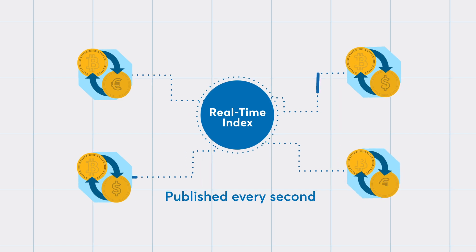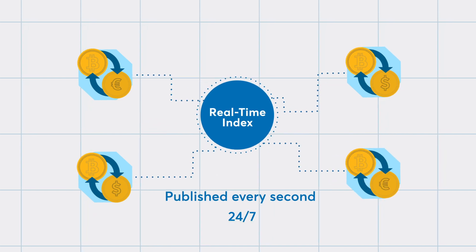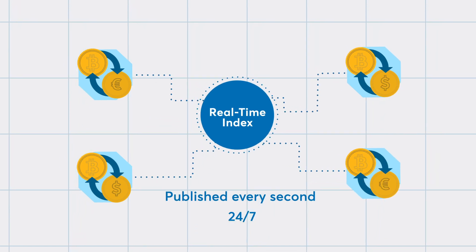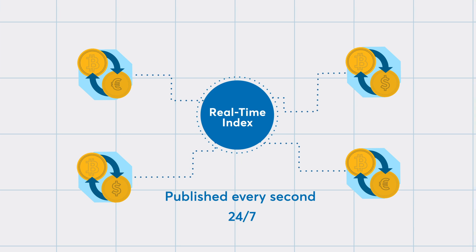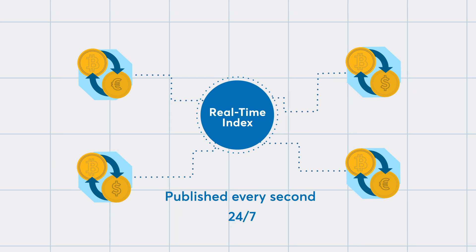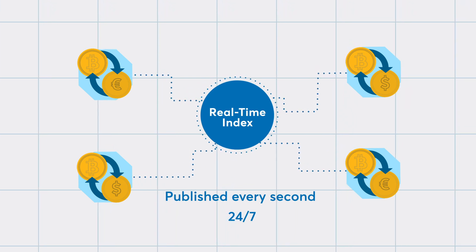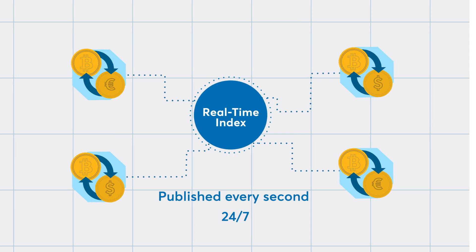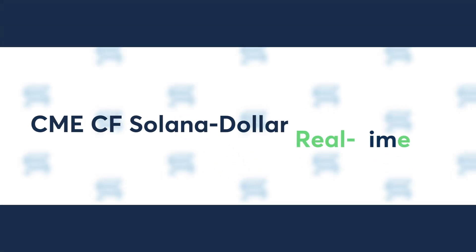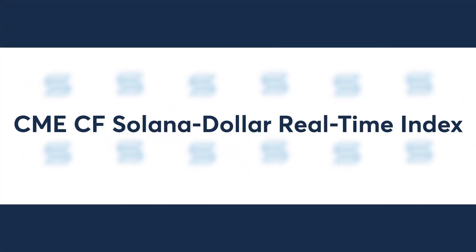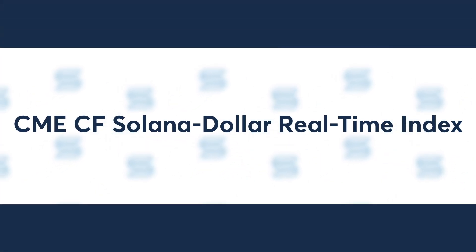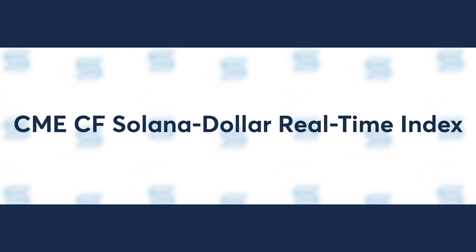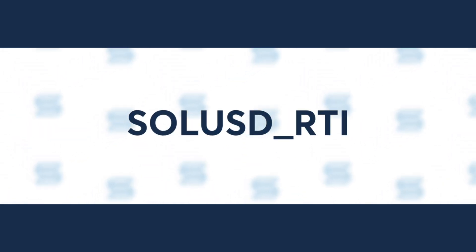Each real-time index is published every second, 24/7, and represents the aggregate indications to buy and sell the specific cryptocurrency across major cryptocurrency spot exchanges at any point in time. Again, using Solana as an example, the real-time index is called the CME CF Solana Dollar Real-Time Index, or SolUSD_RTI.